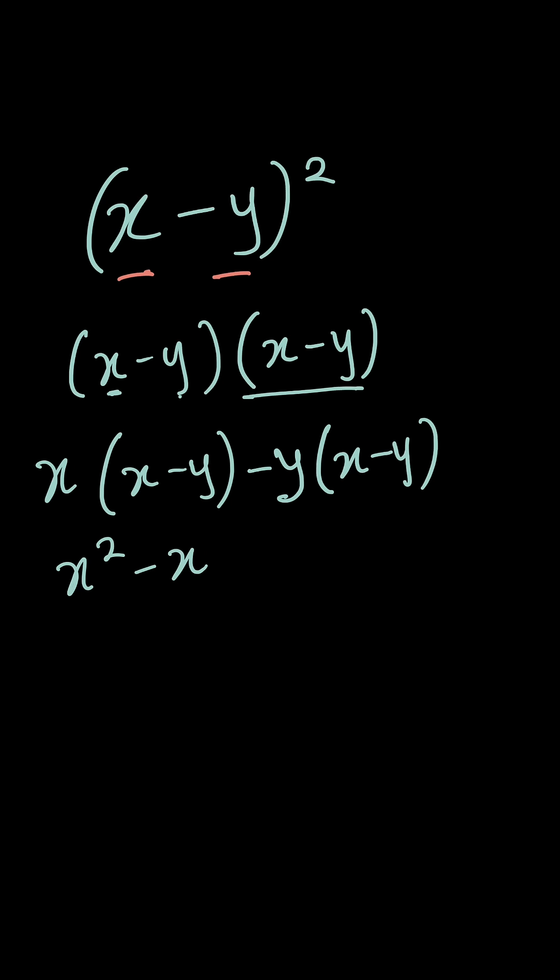So this becomes x² - xy - xy + y², because negative times negative is positive. So now we can simplify our question. So you are going to get x².